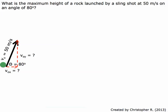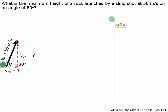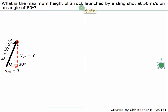In this Type 2 projectile problem, we have a rock being launched from a slingshot at 50 meters per second on an angle of 80 degrees. What we want to do is find the maximum height. In a Type 2 projectile problem, the object lands at the same height it takes off at. The slingshot launches the rock up through the air, it reaches a maximum height, and then starts to come back down. We're trying to find this maximum height right here.